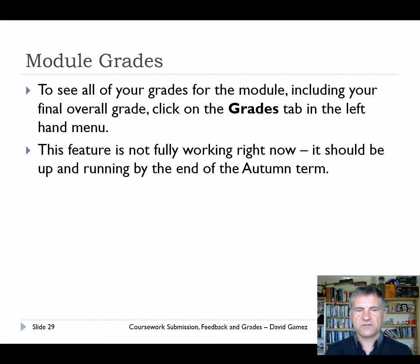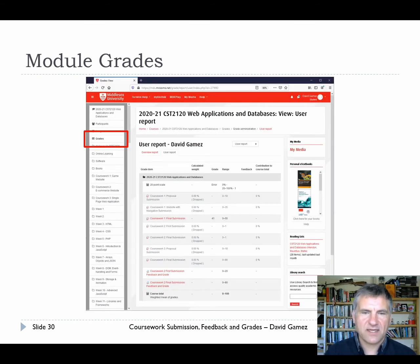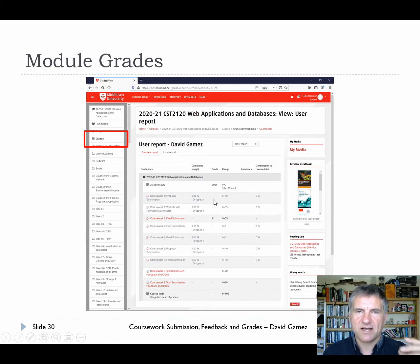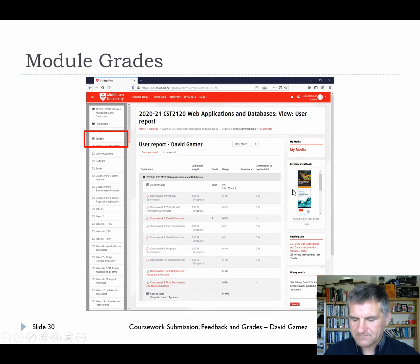To see all your grades for the module including your final overall grade, you can click on the grades tab in the left-hand menu. To get this feature working I need some grades in the system to tweak the weightings and all that. So this feature isn't working yet, but I'm aiming to get it working by the end of the autumn term. All of the grades for your coursework will be put through the learning system. By spring you should be able to see how you're progressing in the module and what your grade is.